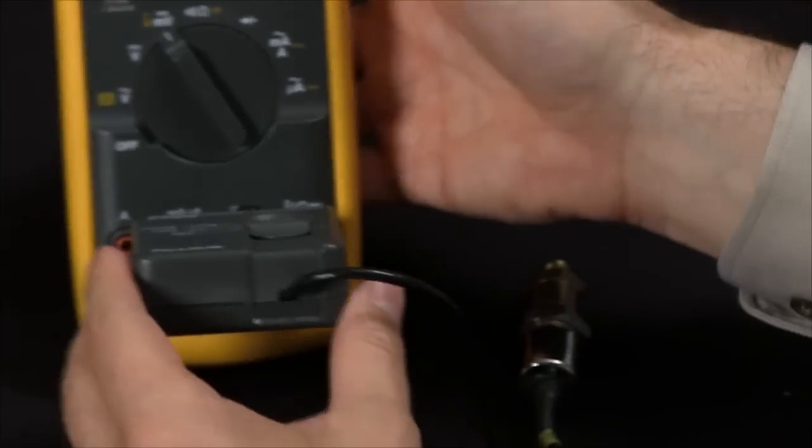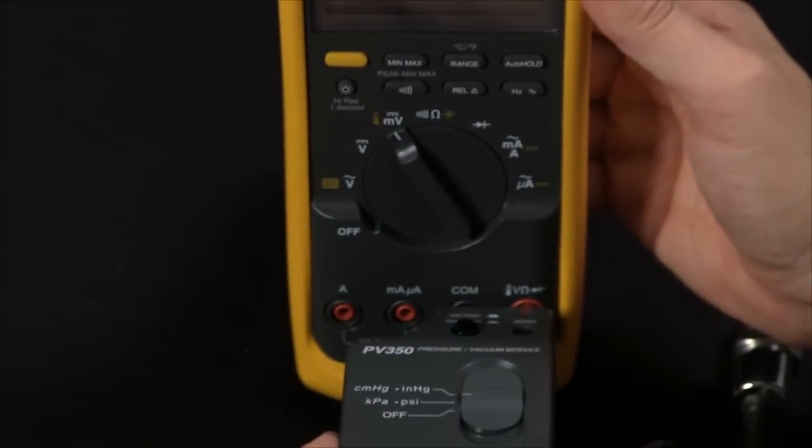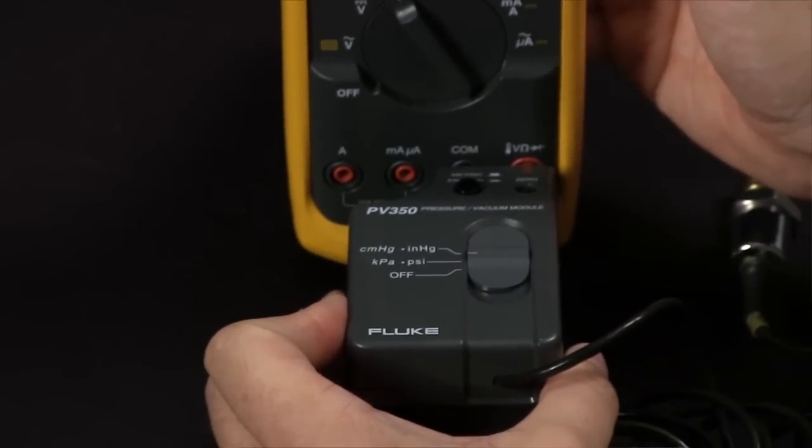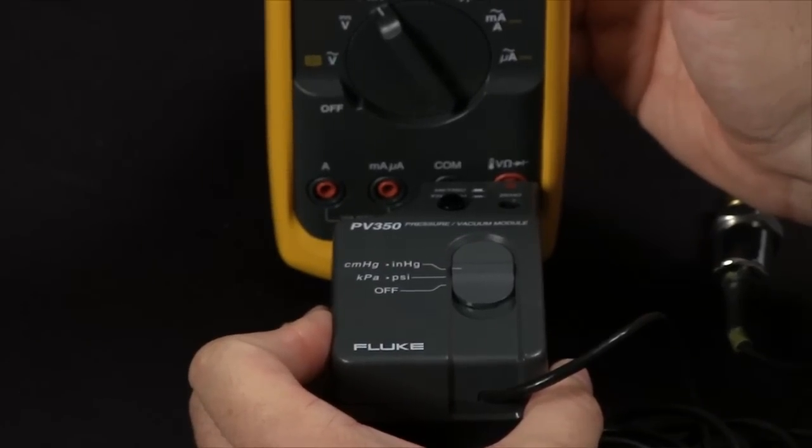This is a very simple operation of the Fluke PV350 pressure and vacuum module, just one of the many ways to extend the capabilities of your Fluke digital multimeter.